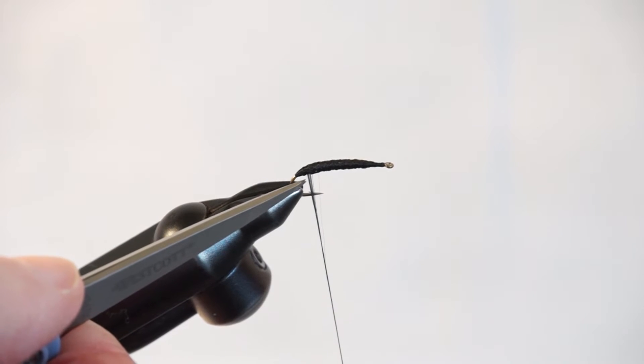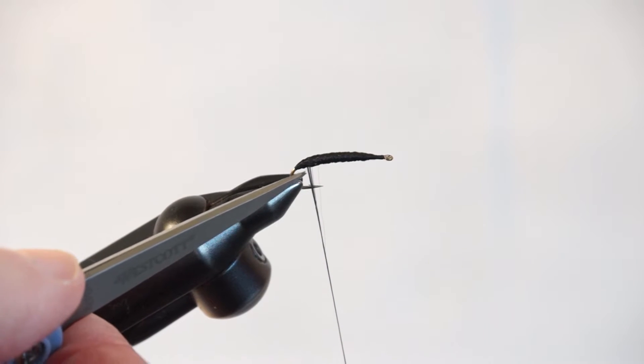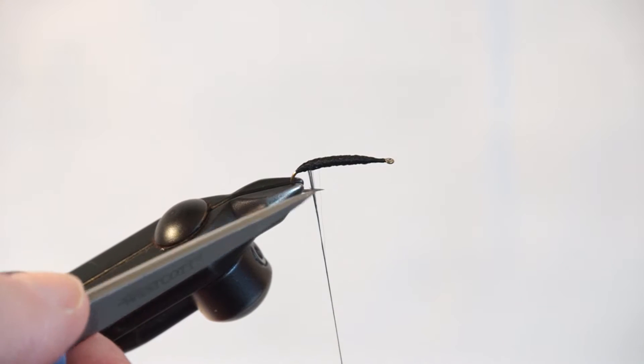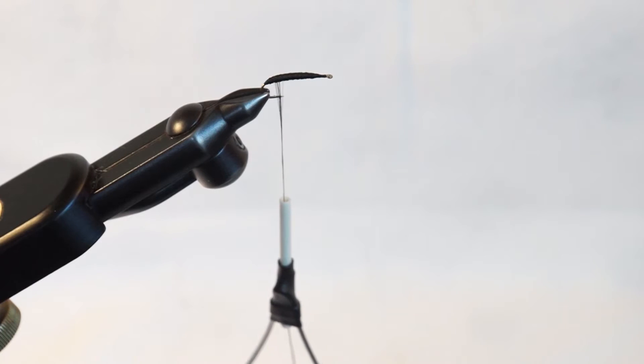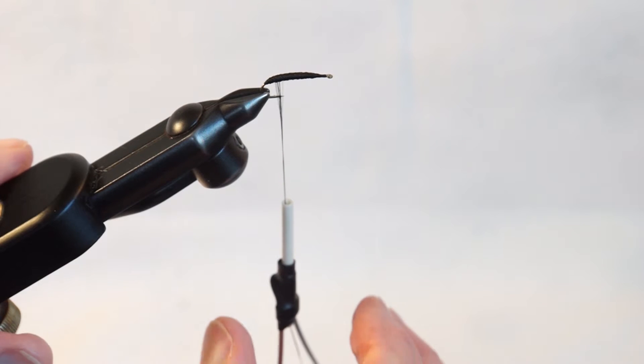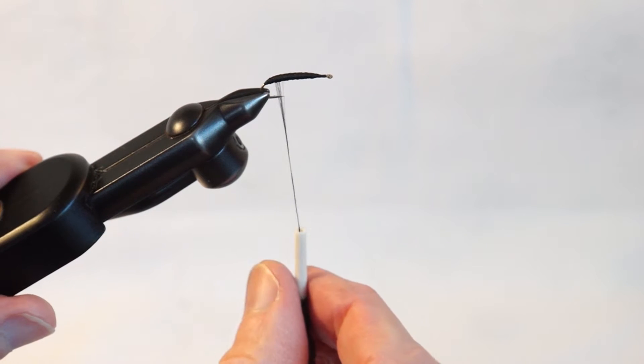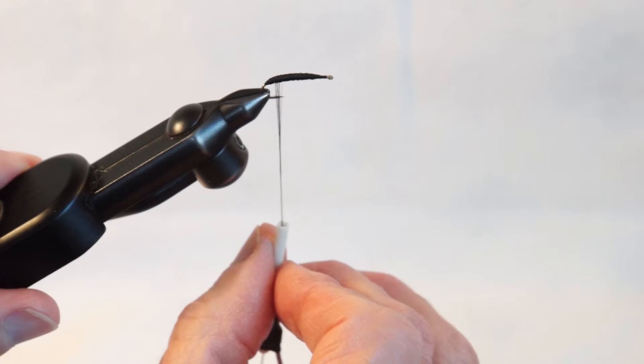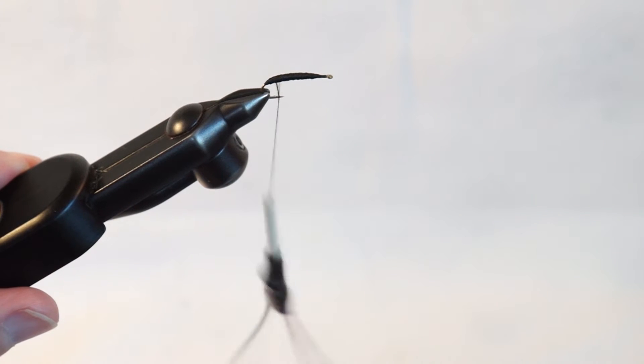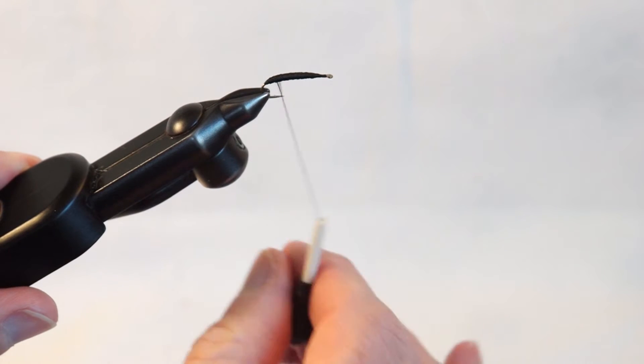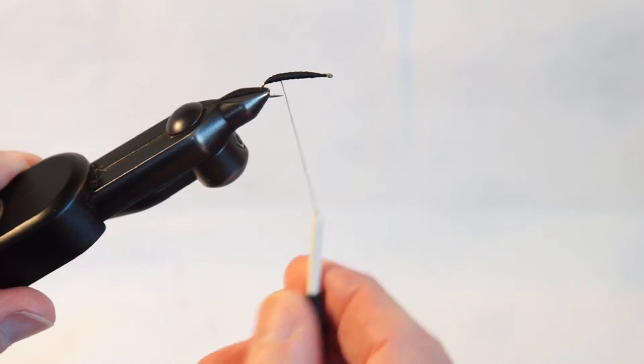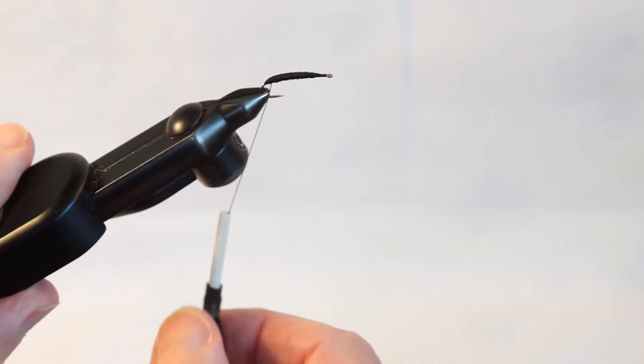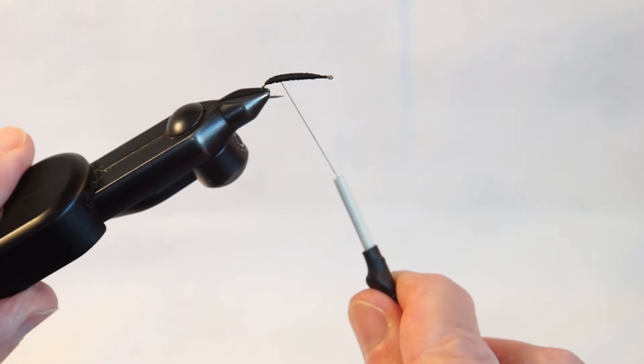So the answer to that is to spin the bobbin. Some threads are flat and it's really hard to tie if they're separated. So you spin it up, spin the bobbin, and that twists it up. Then it will hold in place when you tie.